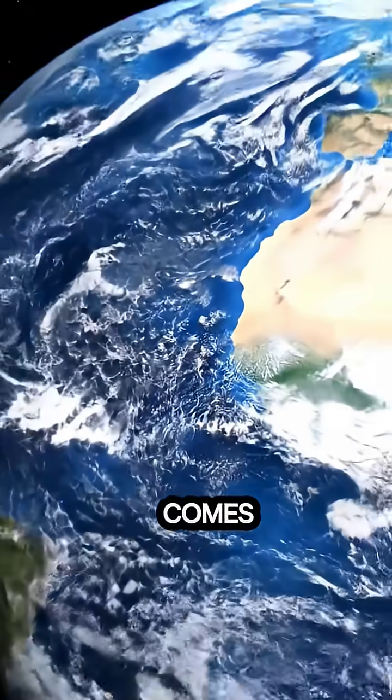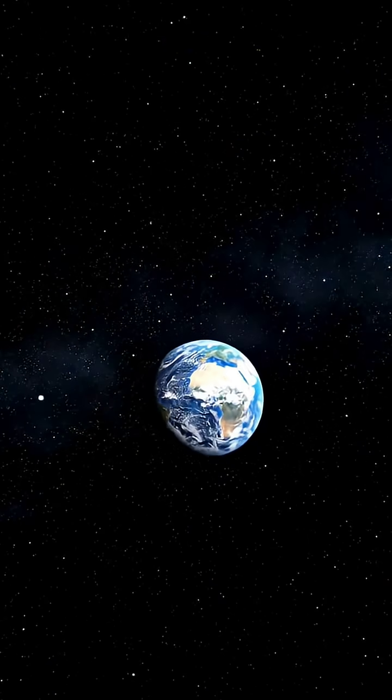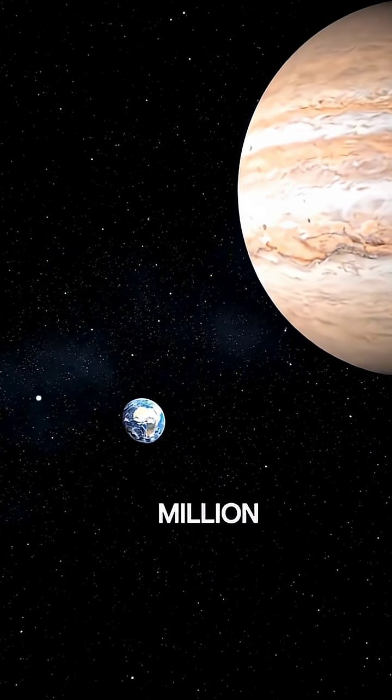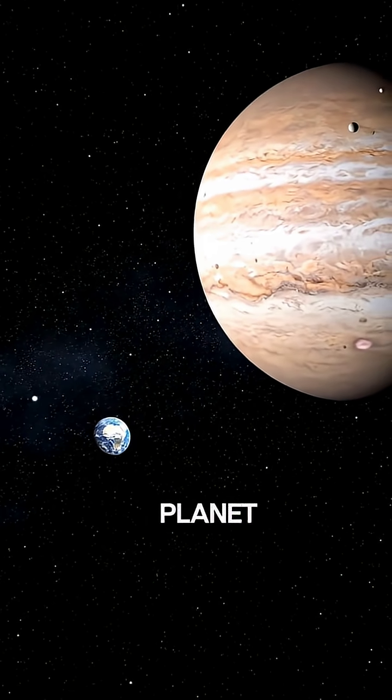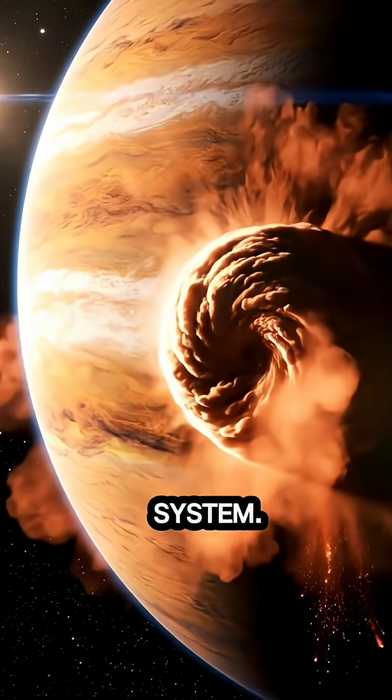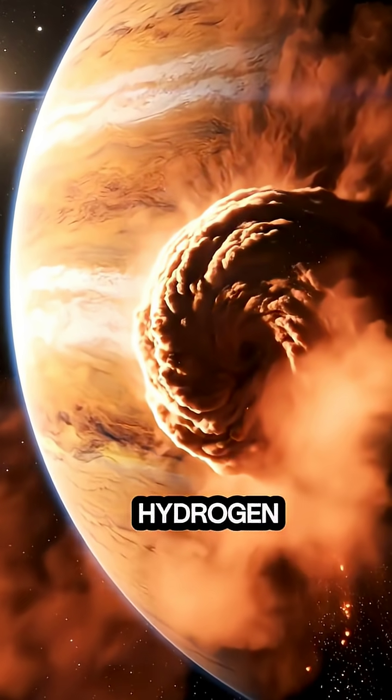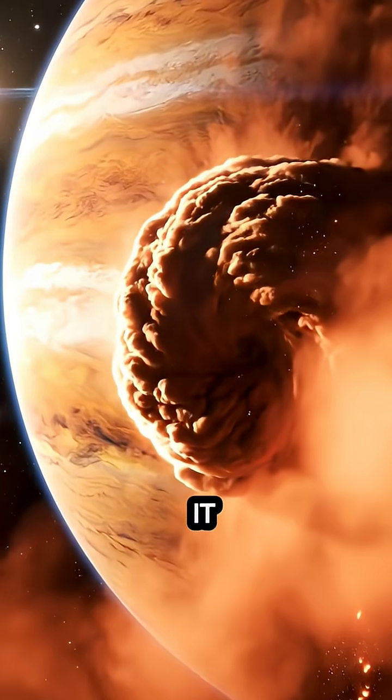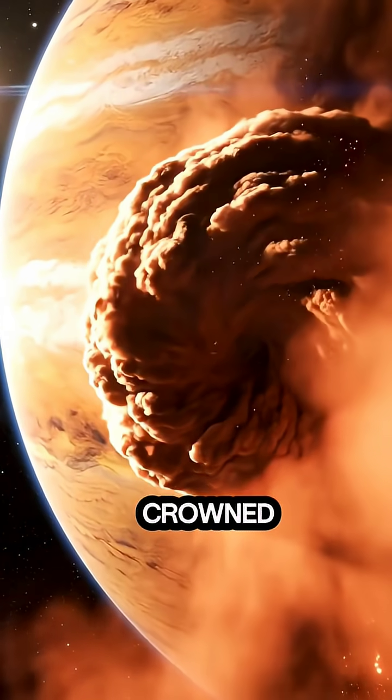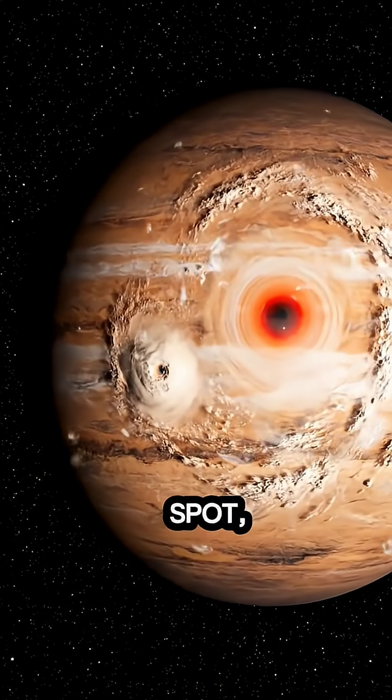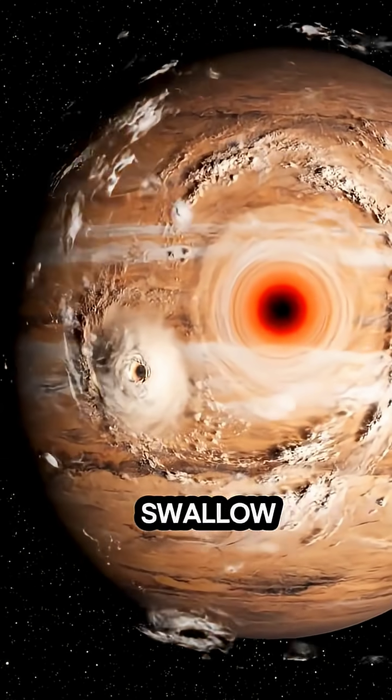Then comes Jupiter. About 628 million kilometers away. The largest planet in the solar system. Made mostly of hydrogen and helium. It is a storm filled giant crowned by the great red spot. A hurricane large enough to swallow Earth.